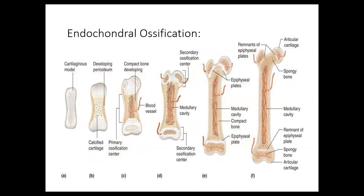Number six: where does long bone formation typically begin? It begins at a hyaline cartilage location. The hyaline cartilage is used as a model or template for the formation of these bones, which are called endochondral bones. This is the process for the development of most of the skeletal bones.